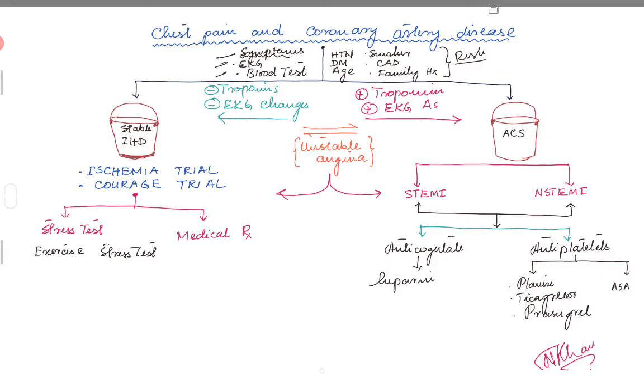The basic thing is to have an idea and keep things very simple. Somebody comes in with chest pain, you just have to basically categorize them into two buckets. Number one is stable ischemic heart disease and number two is ACS. Once you put the patient in one of these buckets, things start to come together and become very simple.